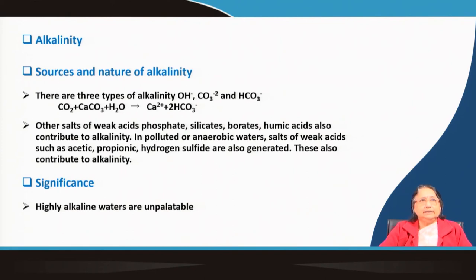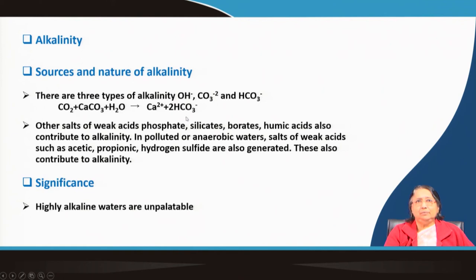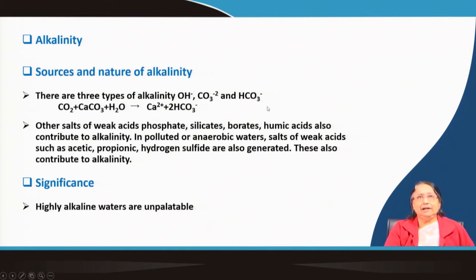Alkalinity determination is also very important. There are three types of alkalinity: OH⁻ ions, carbonate ions, and bicarbonate ions. Carbonate-bearing rocks reacting with carbon dioxide in the presence of water can produce bicarbonate — the same process involved in forming calcium bicarbonate hardness. So there are basically three types of alkalinity contributing species.